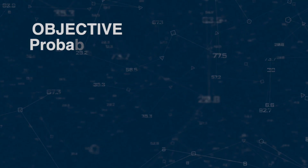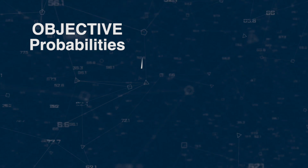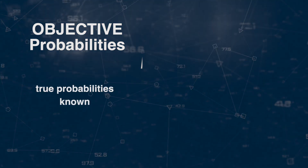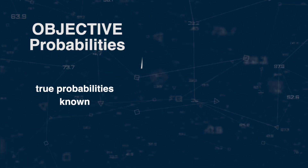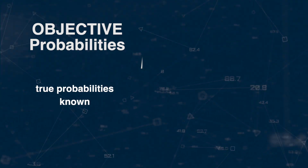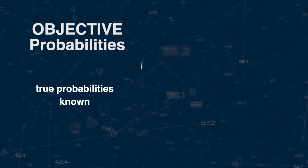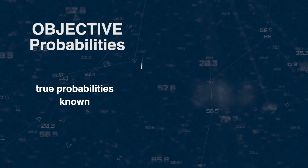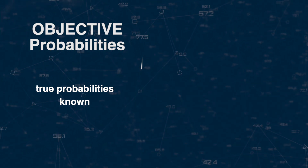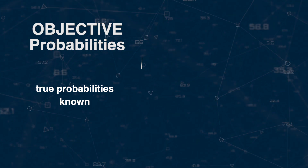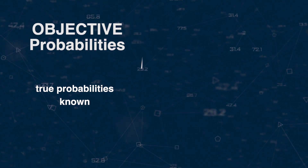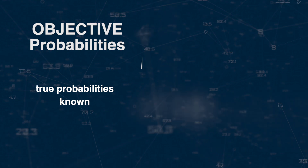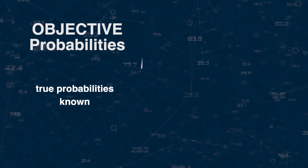Betting with objective probabilities refers to situations where the true probabilities of an event occurring are known or can be accurately calculated. As a result, it becomes close to impossible for bettors to find value in this market, since the odds are already adjusted to reflect the objective probabilities.